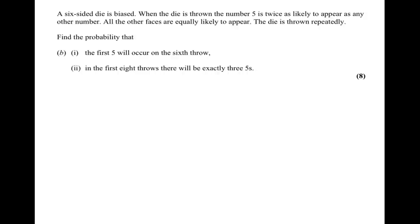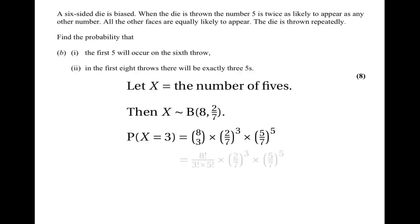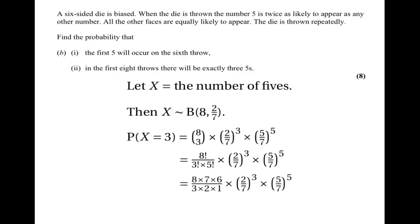The last part asks for the probability that exactly 3 of the first 8 throws are fives. Let x be the number of fives; then x ~ B(8, 2/7) — 8 because there are 8 throws, and 2/7 because that's the probability of a five. P(X = 3) = 8 choose 3 times (2/7) cubed times (5/7) to the power of 5. Now 8 choose 3 = 8 times 7 times 6 over 3 times 2 times 1, giving a final answer of 0.2429.